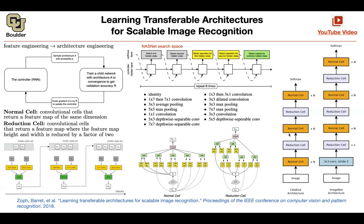Within each cell, the adding or concatenation - that's searched. But in between each cell, that connection is always concatenation by definition, correct? Within each cell, yes, this last step is always concatenation. But the other ones might or might not be - they could be addition or concatenation. But the architecture that the search space came up with is mostly addition.